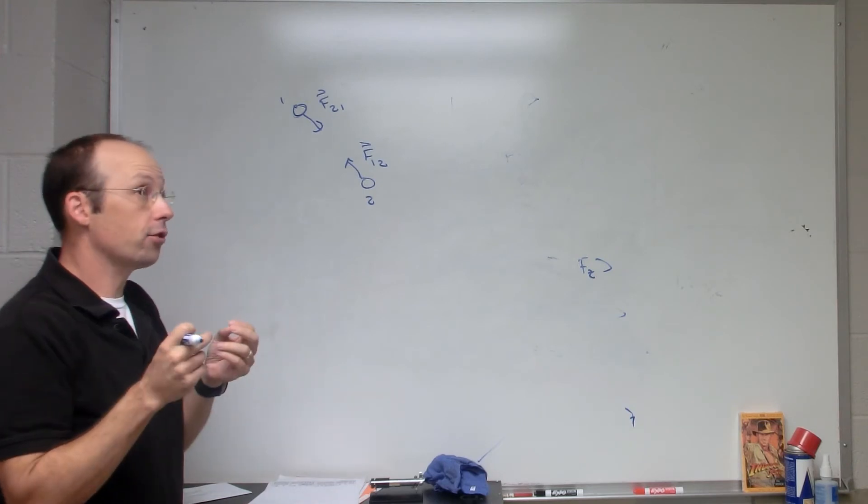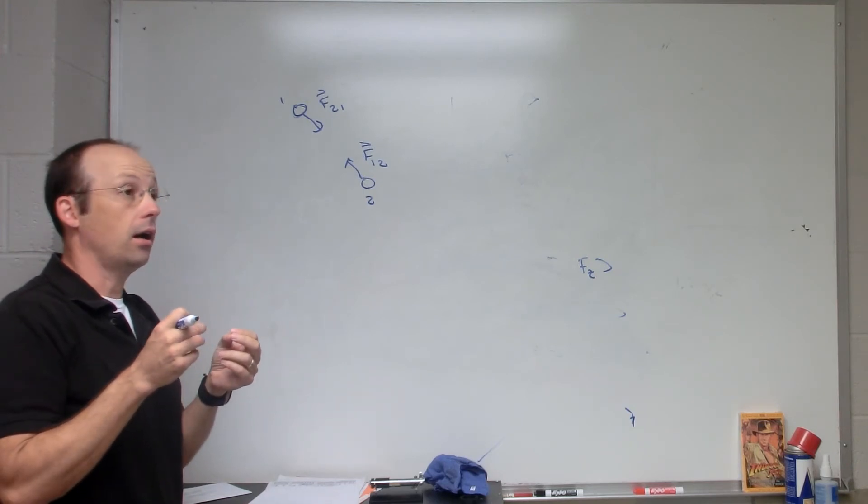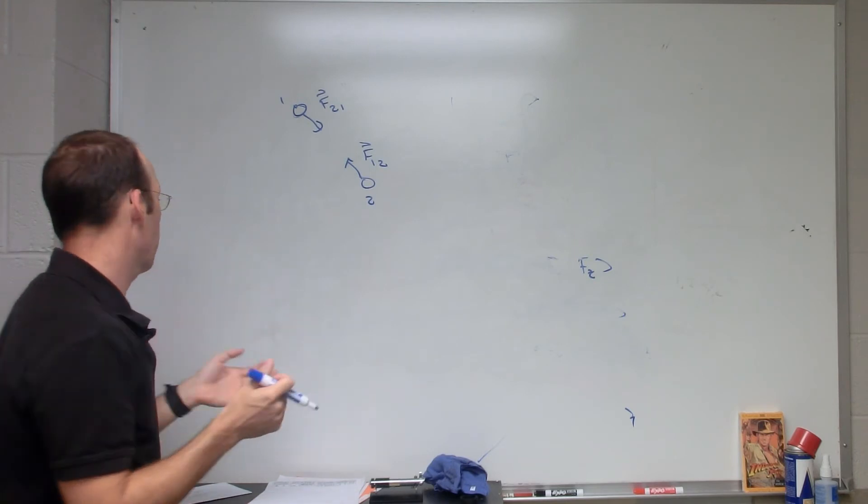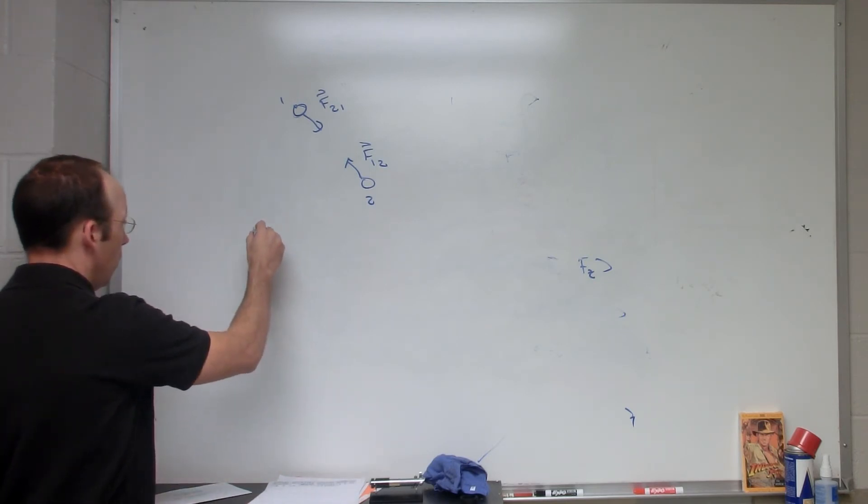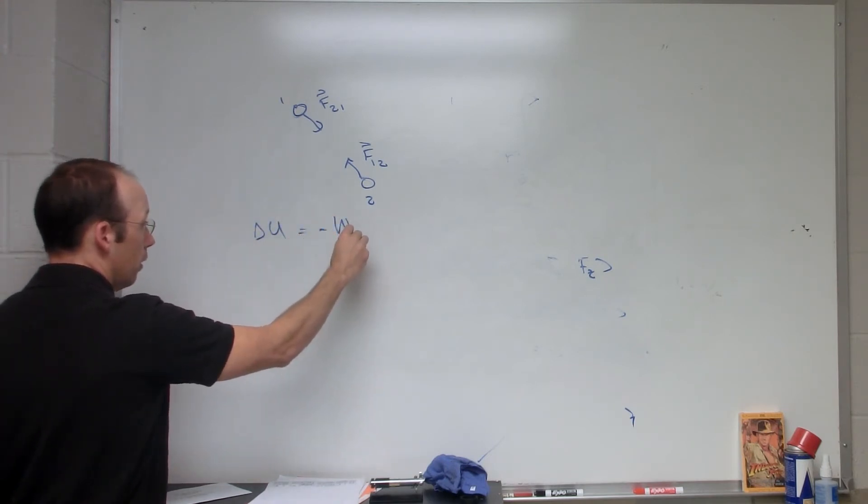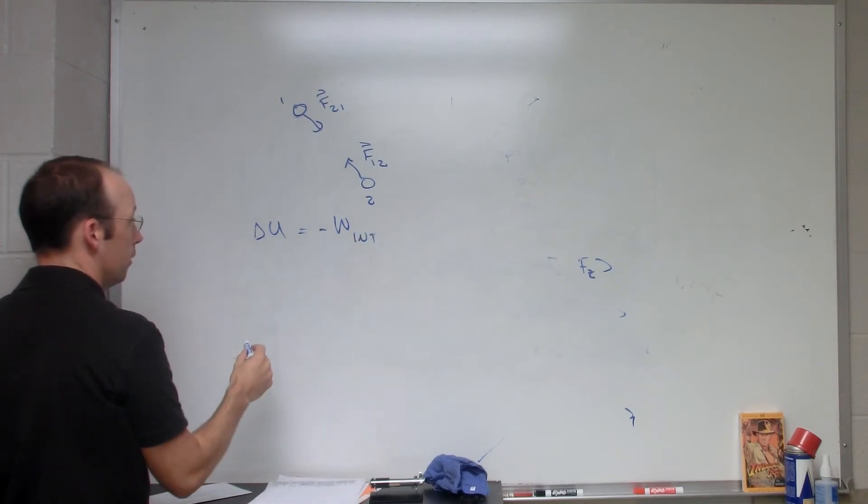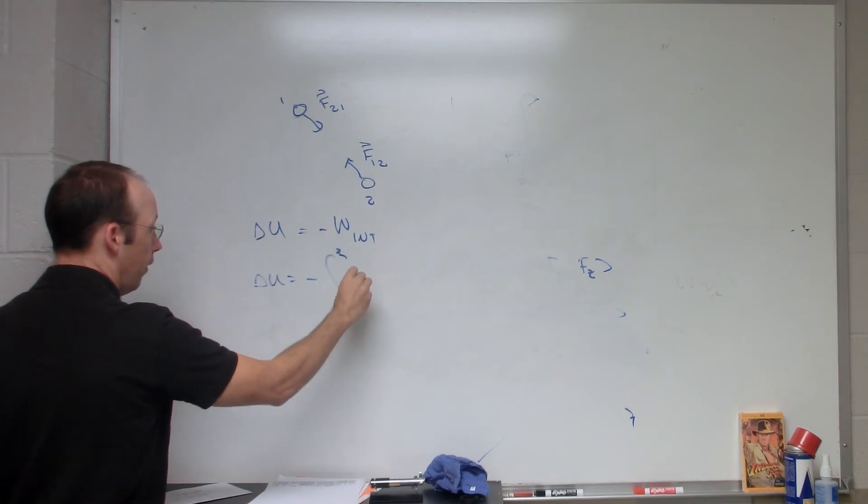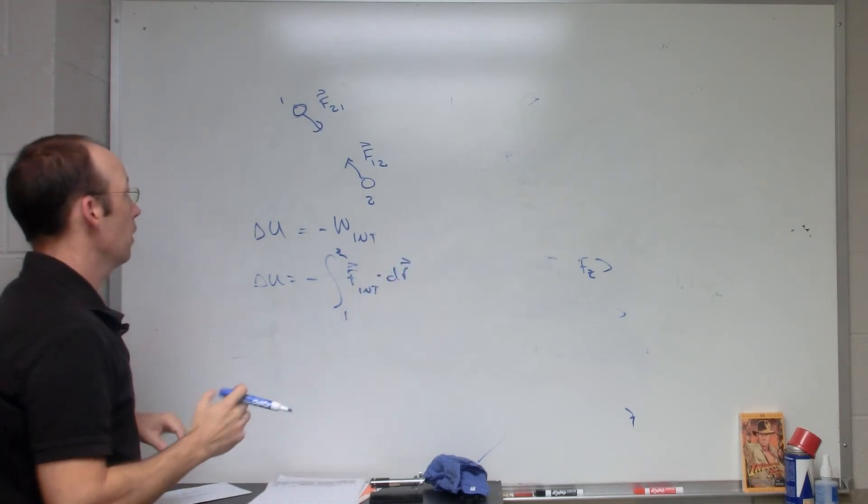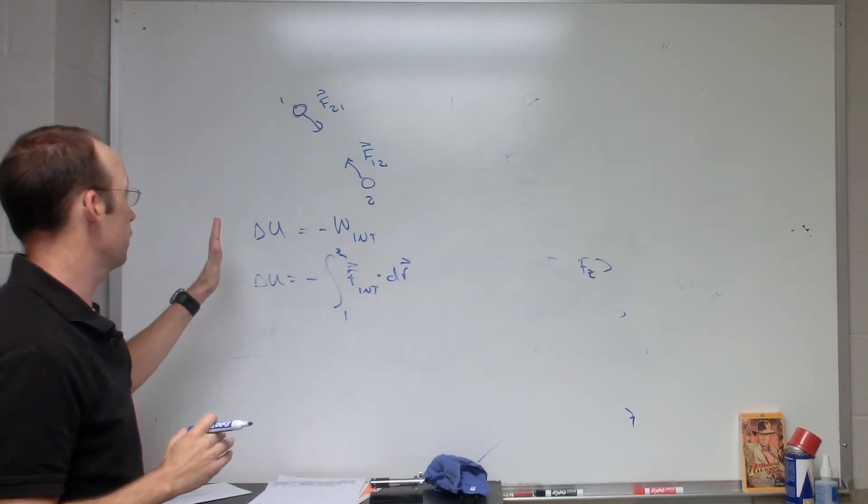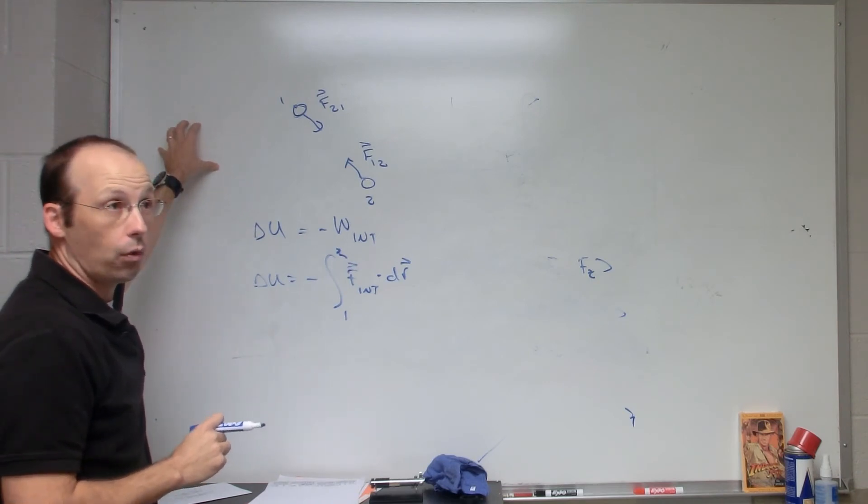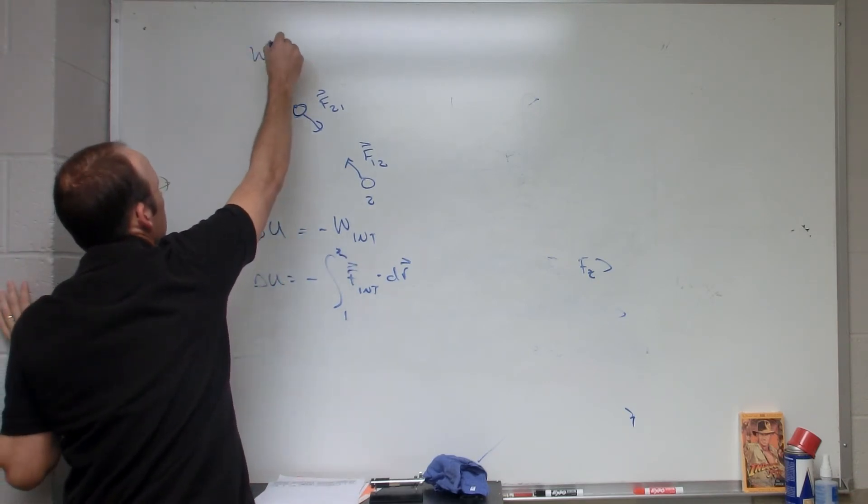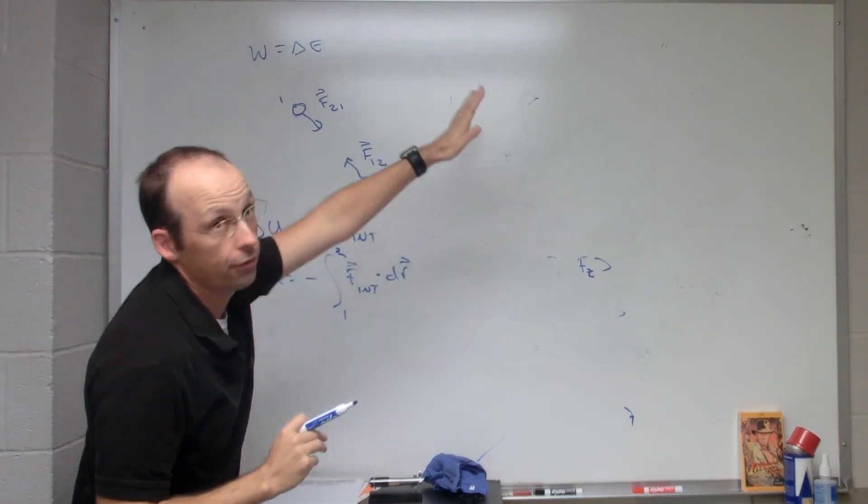So if I have internal forces, then instead of saying those do work, we're going to say there's a potential energy. Change in potential energy is going to be negative the internal work done. So the change in potential would be negative the integral from one to two of F internal dot delta r. Really what you're doing is taking work on the left hand side of work equals delta E and moving it to the other side where it becomes negative.